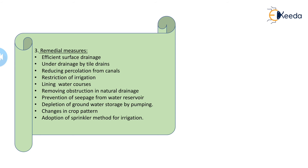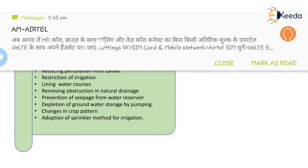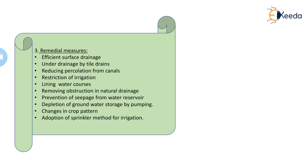Changes in crop pattern also help — if the same crop is grown in the same area repeatedly, soil fertility decreases. The water requirement differs when we change the crop pattern, so we should choose various different crops for our fields. Finally, adoption of the sprinkler method for irrigation reduces waterlogging problems. By implementing all these measures and methods, we can control waterlogging problems.